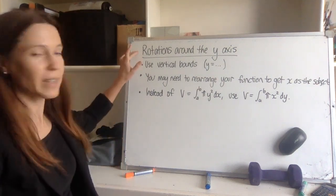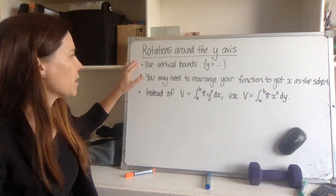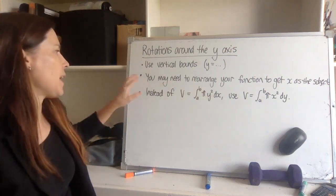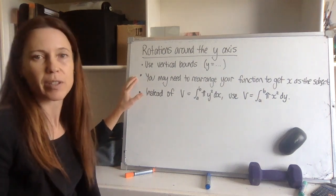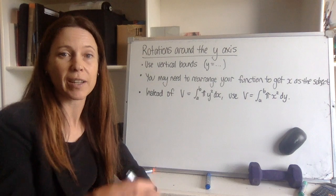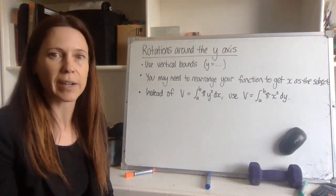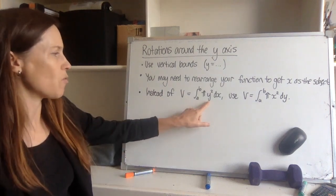Now if you're rotating around the y-axis instead of the x-axis, just make a few changes. Your bounds are going to be vertical now, there'll be y equals a and b, and you might need to rearrange your function to get x as the subject, because a lot of the time we'll be given the function as y equals something, so you'll need to rearrange it and then also square it to get x squared, because instead of using this formula where we have y squared dx, you need to use x squared dy.